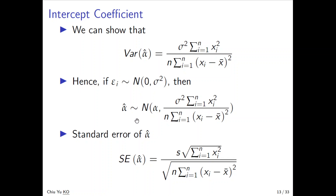We now talk about the intercept coefficient and how to estimate alpha. Given the assumption that epsilon follows a mean-zero, constant variance distribution, alpha depends on the data obtained. Each time we get a different epsilon, which gives a different alpha and beta. So alpha and beta are random variables because epsilon is variable, generating different y values. That's why we want to discuss the variability of alpha.